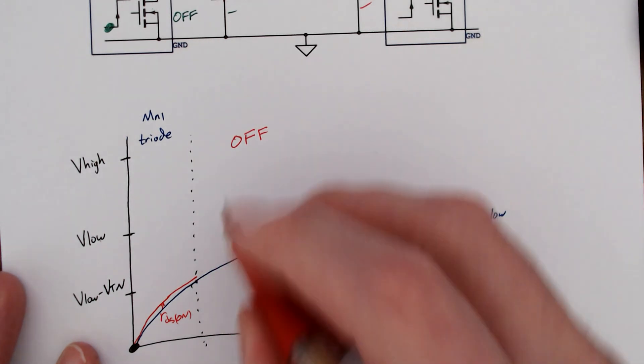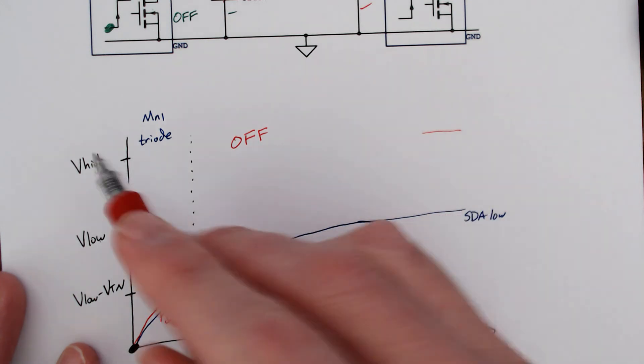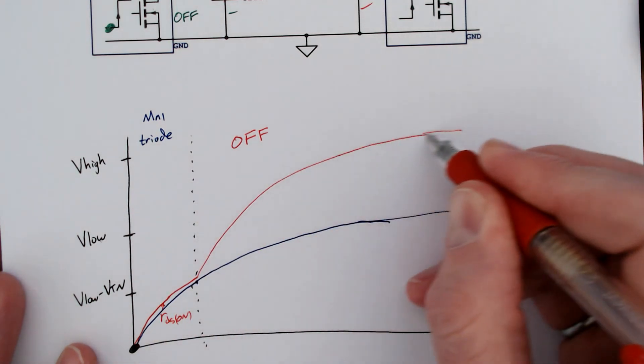And at the same time, we're going to increase up to SDA high, or the 5 volts in our case, and go like this.